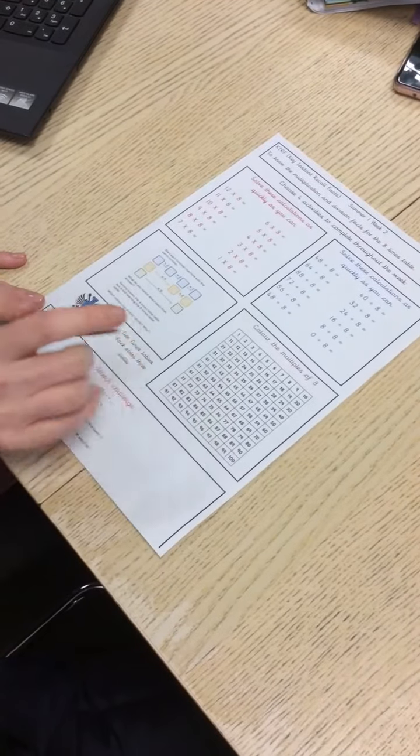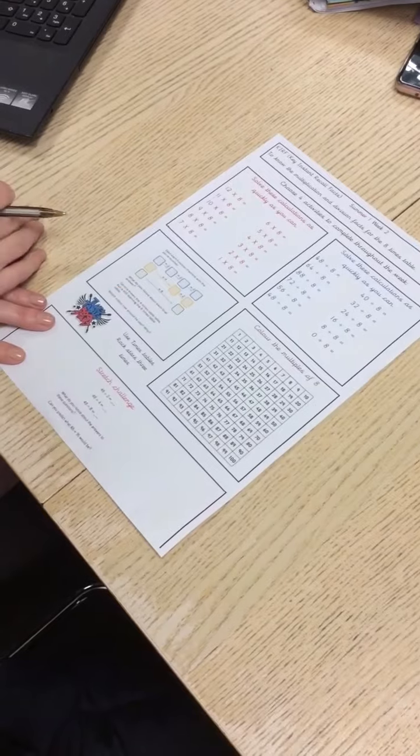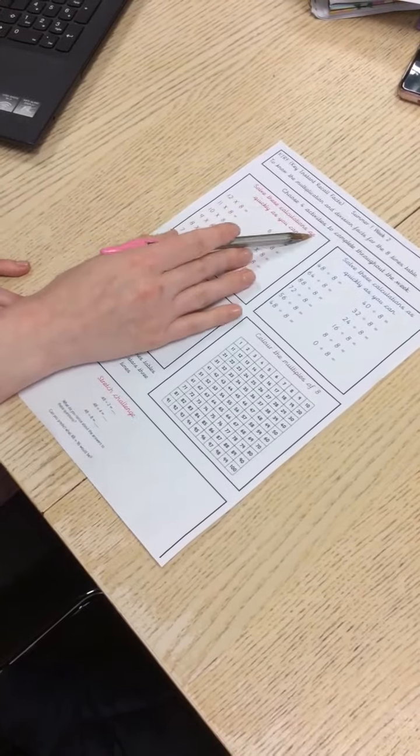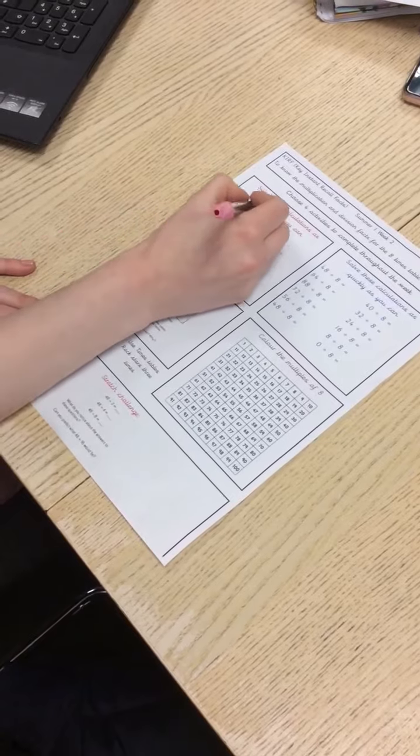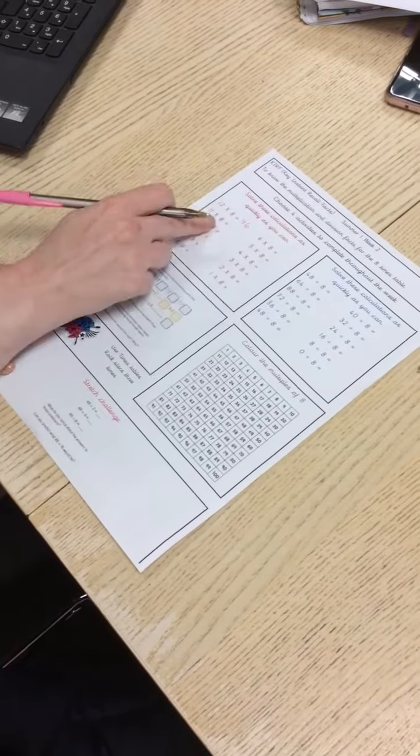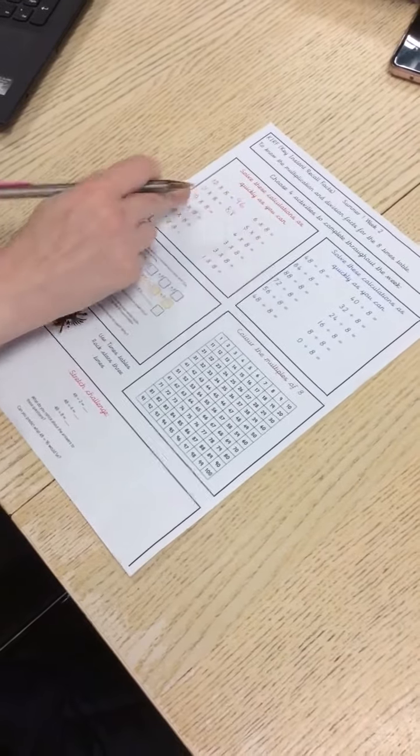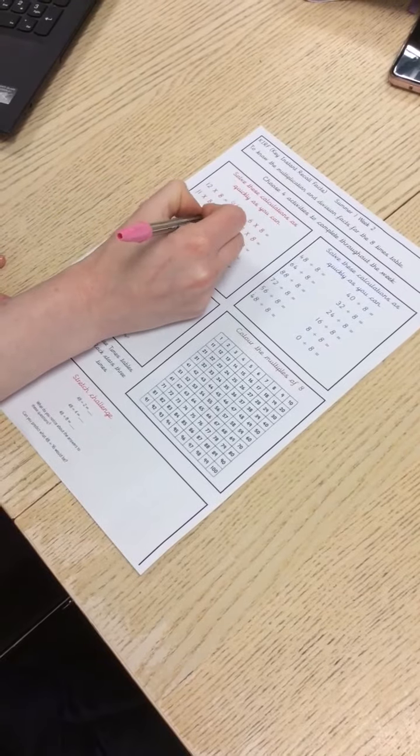This is an example of what one of them might look like. Solve these calculations as quickly as you can and you just work through them. So 12 times 8 is 96, 11 times 8 is 88, 10 times 8 is 80, and so on.